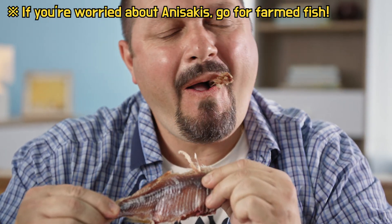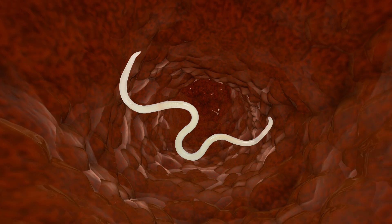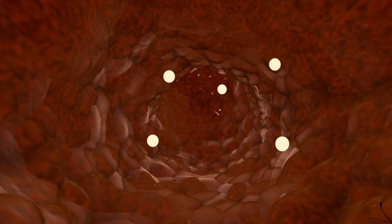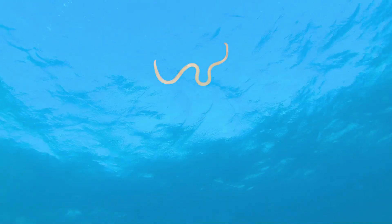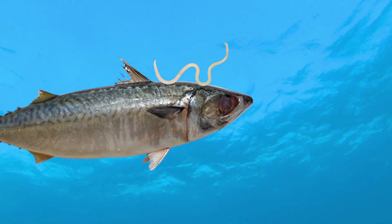Male Anisakis release a copulatory spicule near the anus and mate with females. After mating, females lay eggs inside the digestive tract, and the eggs attached to the feces are released into the sea. The eggs hatch and the larvae parasitize other marine creatures, continuing the same life cycle. This is the life cycle of Anisakis.